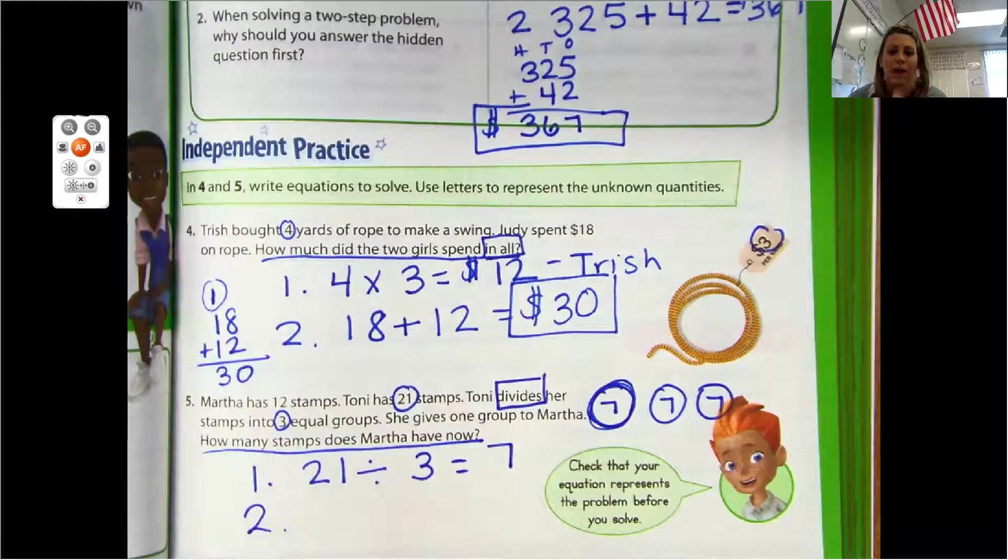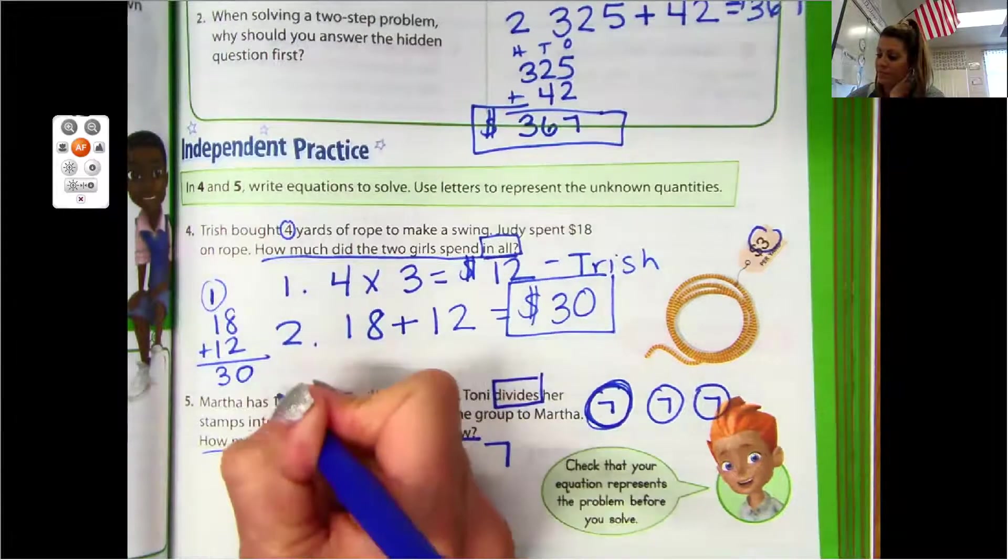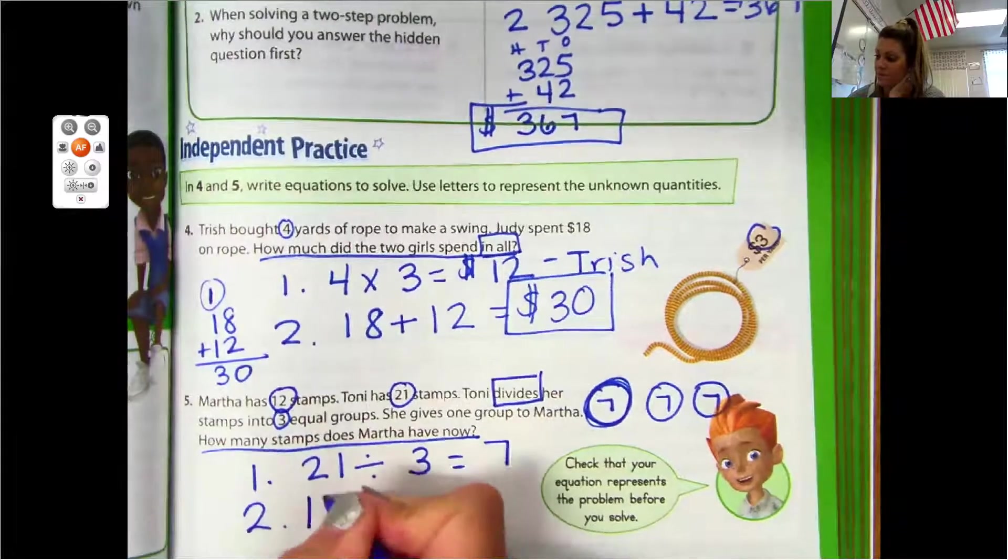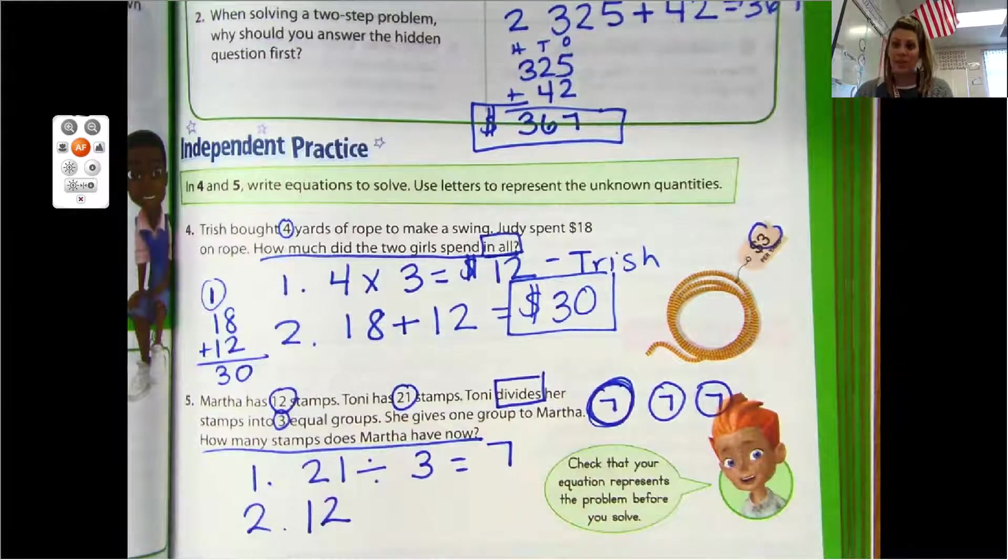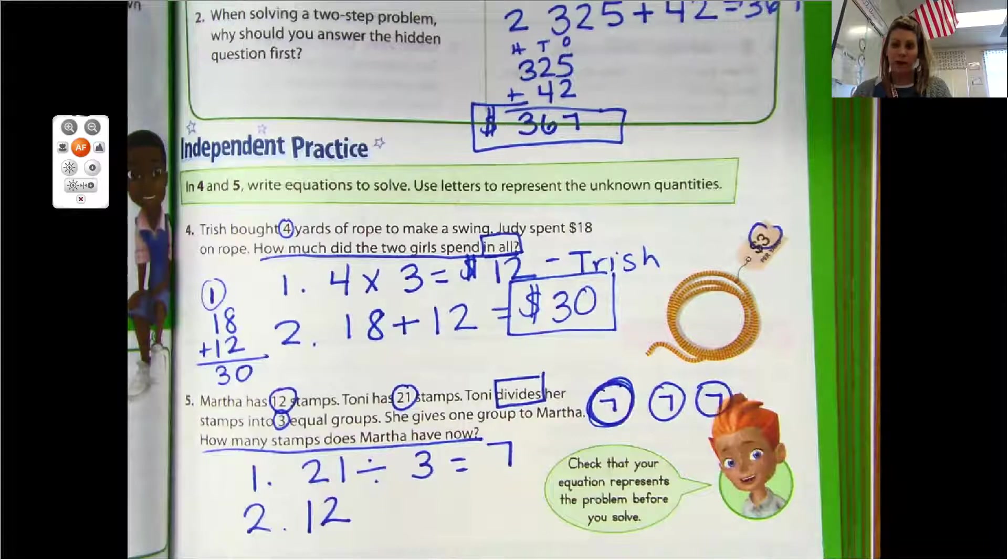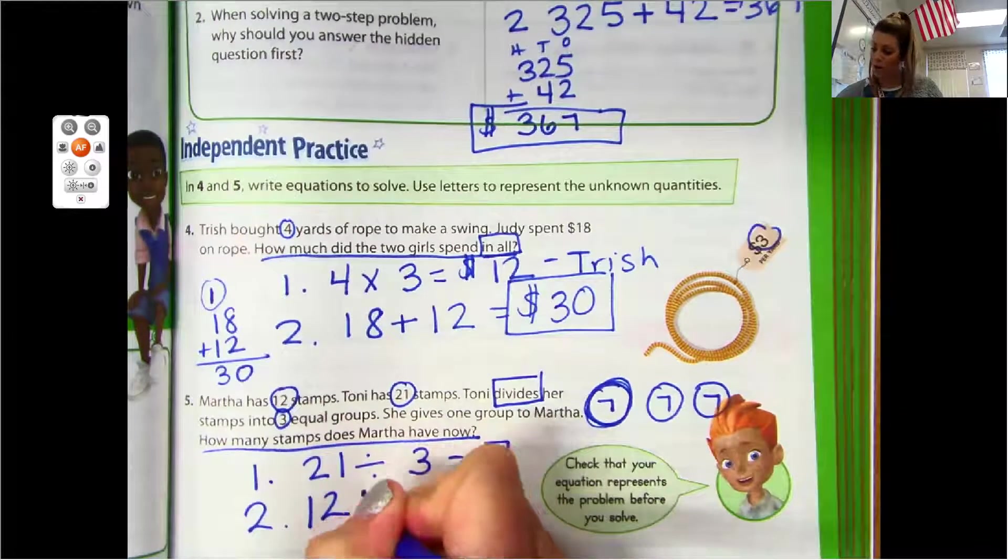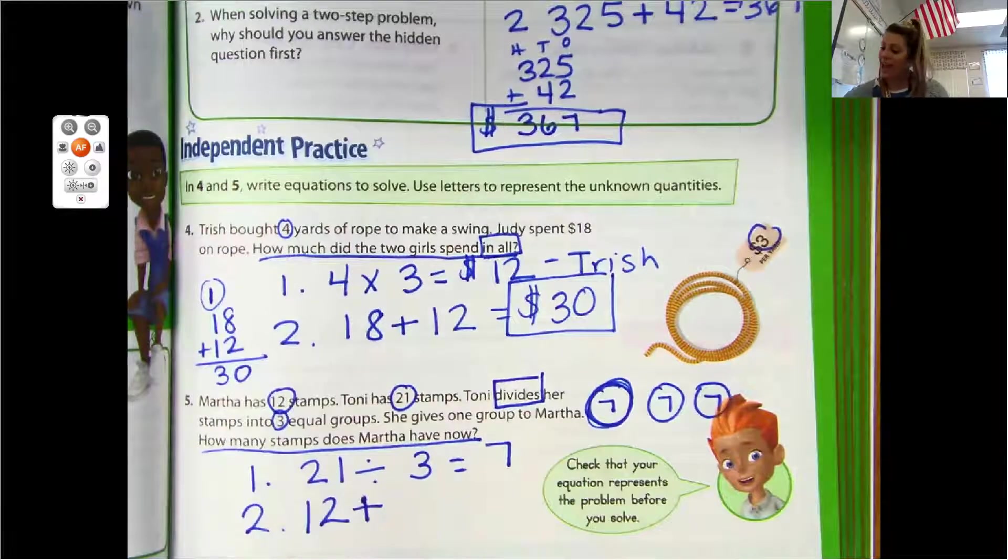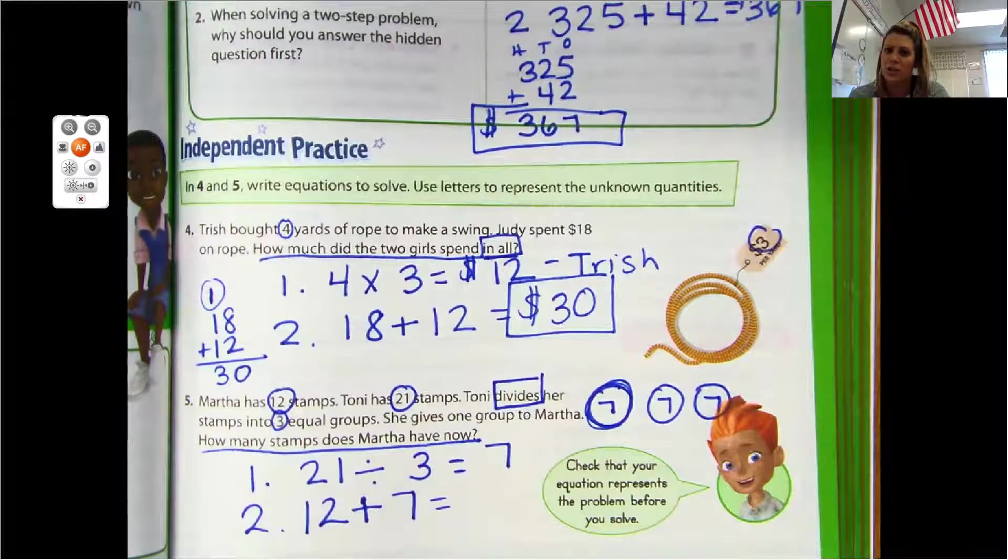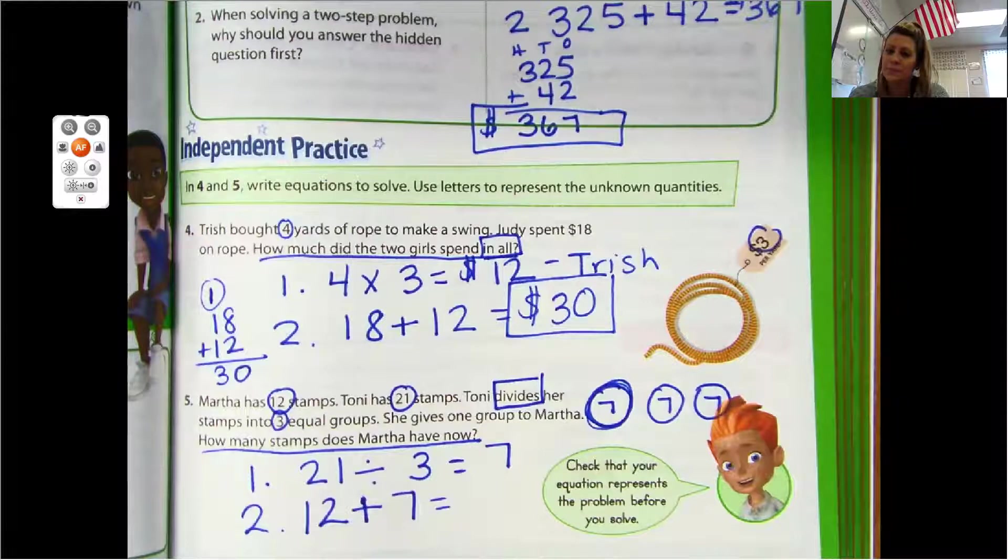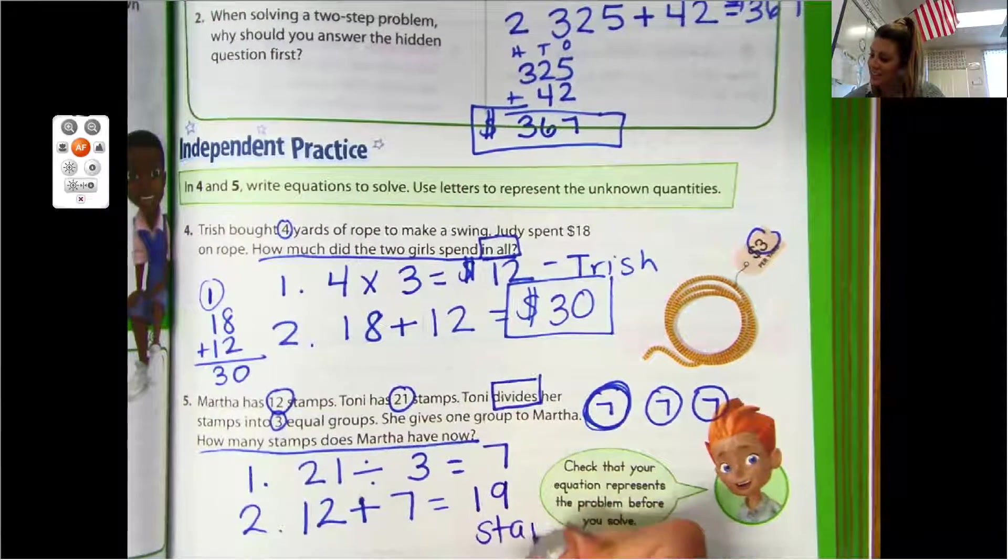How many stamps does Martha have now? How many stamps did Martha start with? Martha had 12 stamps to start with. And then Tony gave her seven. If someone's giving you something, are you adding, subtracting, multiplying, or dividing? If they give you something, you are getting more, so you are adding. Add that seven more to those 12 stamps Martha already has. You should have gotten 19 stamps.